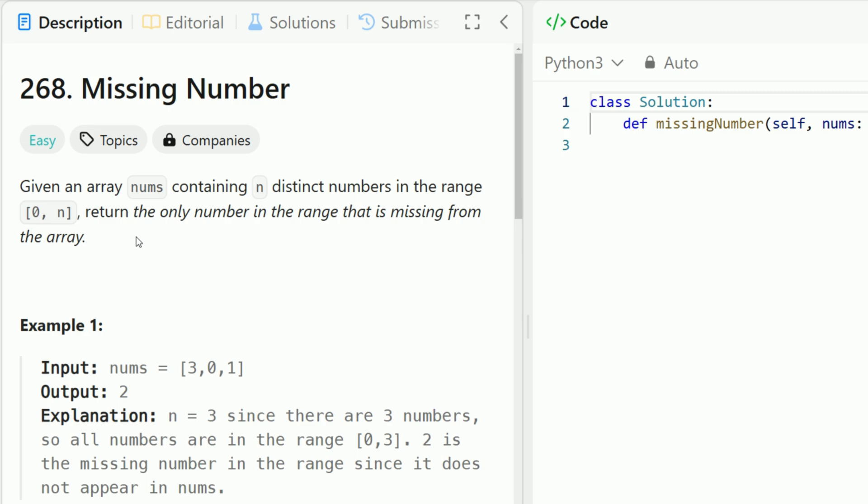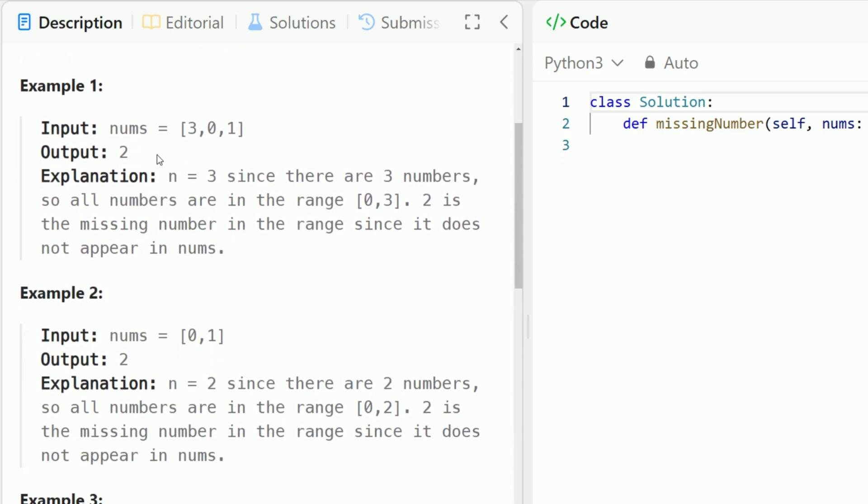This is one of my favorite Leetcode problems because there's two main ways to approach this problem and I'm gonna go over both of them with you guys. Let's take a look at the example. If you're given an integer array nums with 3, 0, 1, you must report back the missing number. In this case the missing number is 2.